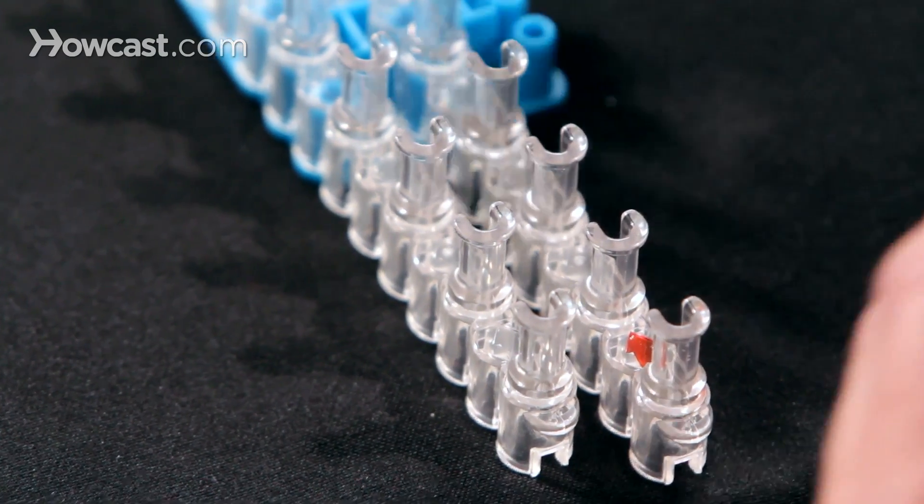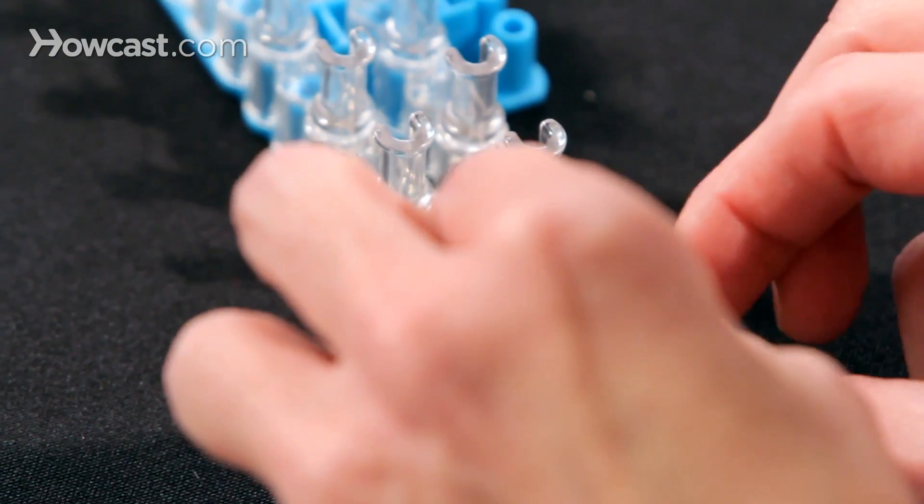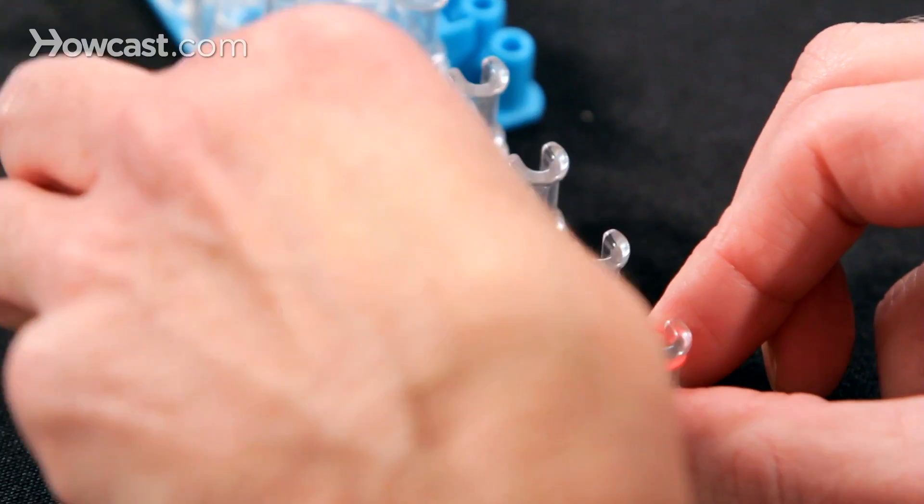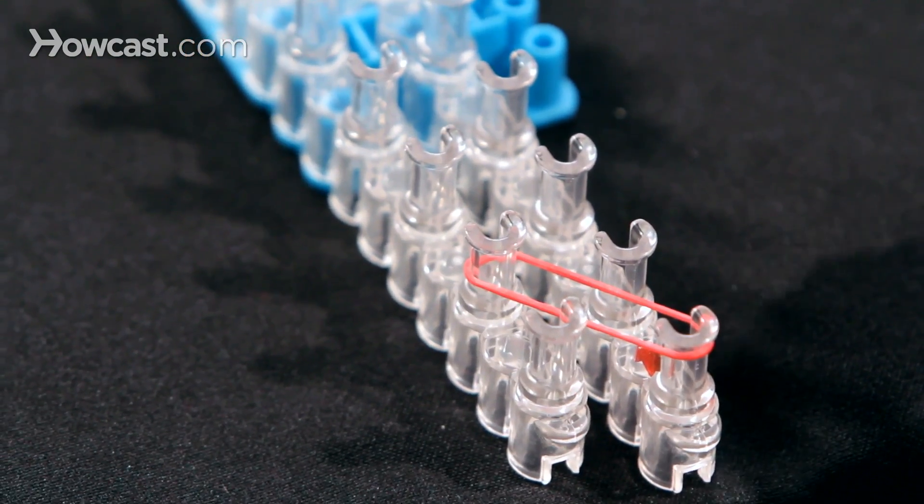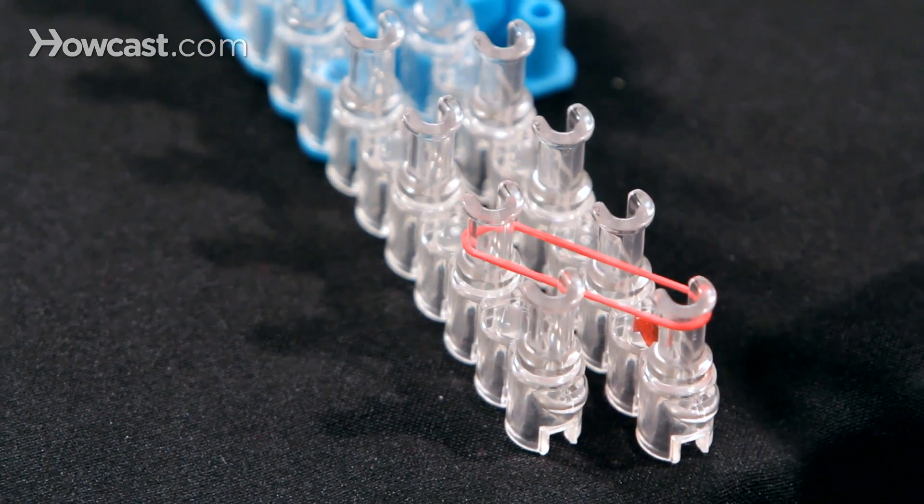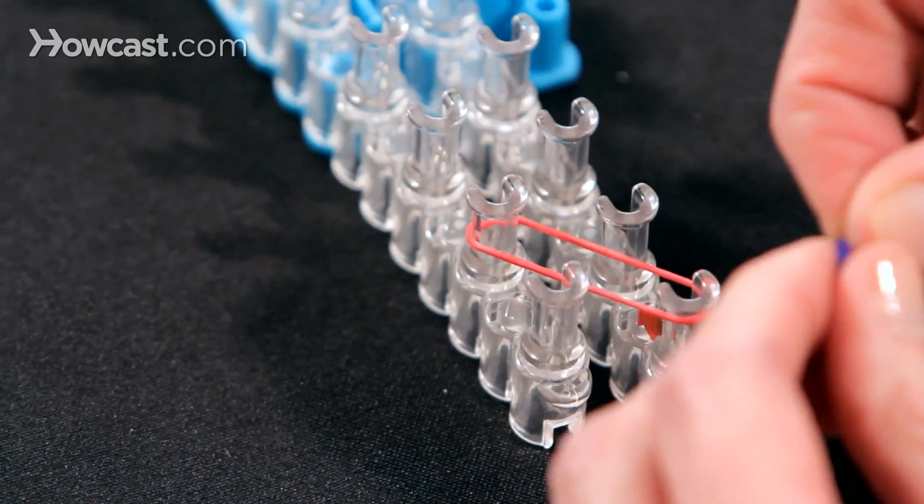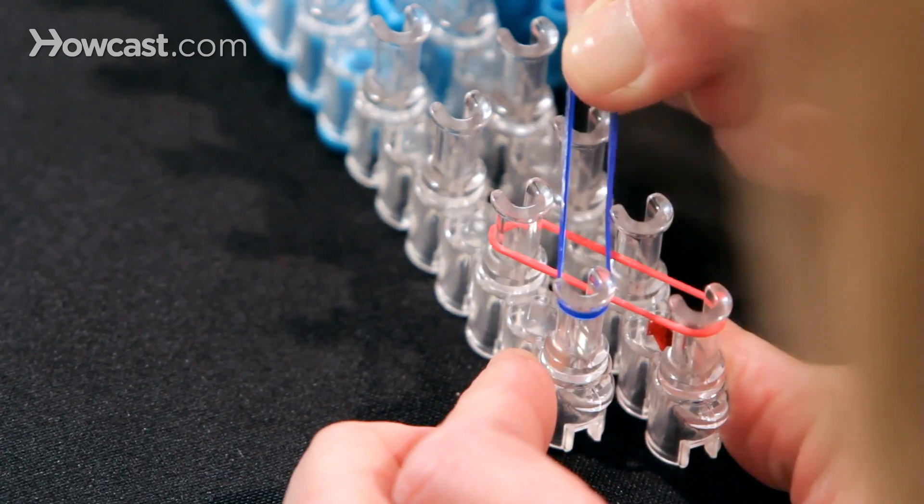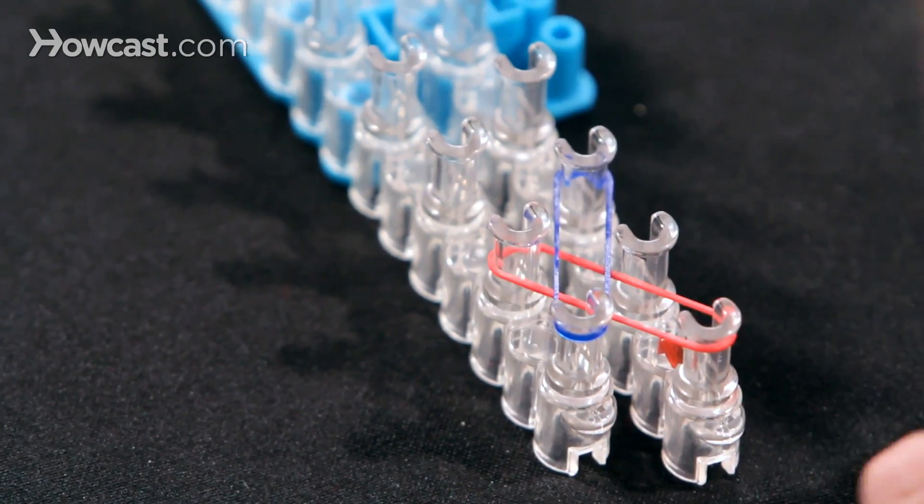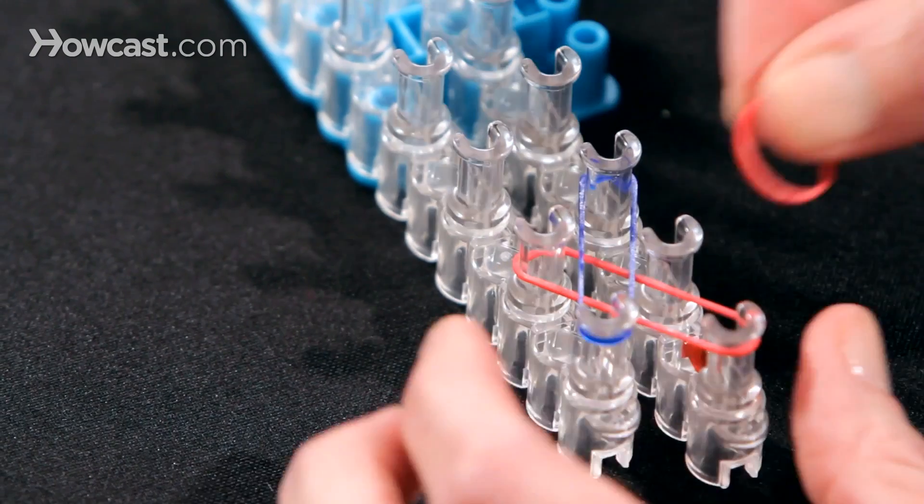Then we're going to grab our first band, and we're going to start with red. And we're going to attach it from the first pin to the second one on the left side. Then we're going to grab a blue, and we're going to attach from this pin to this pin. The next band is a red one, and we go from here to here.